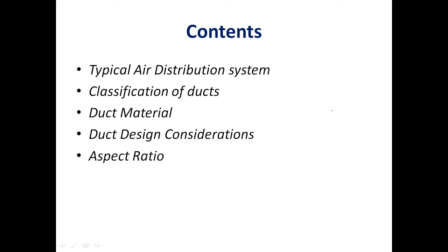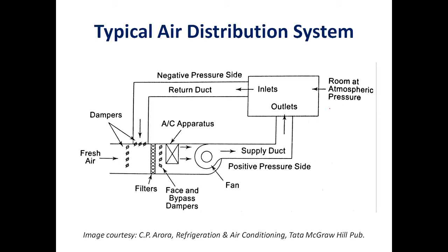Let us begin. This is the layout of a typical air distribution system. The most important part is the air conditioning apparatus, which is the cooling coil or evaporator coil of a vapor compression system or vapor absorption cycle. It cools and dehumidifies the air in a summer air conditioning system.